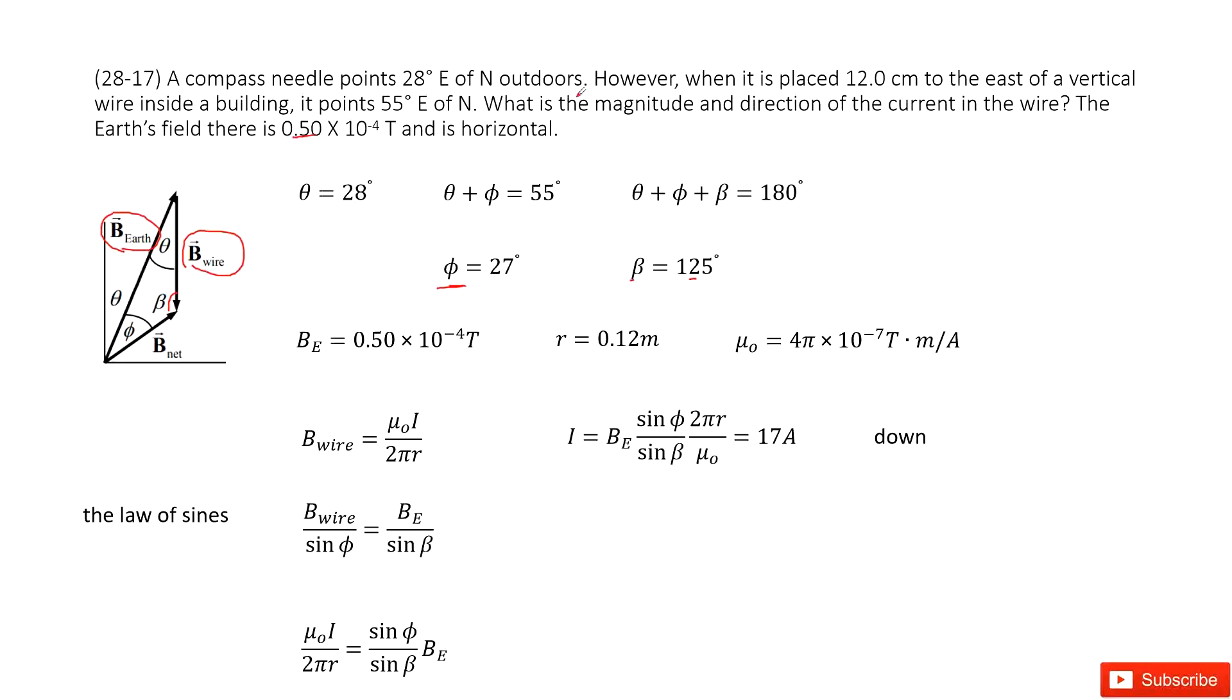You need to find the magnitude and direction of the current in the wire. You can connect this with B wire, the magnetic field for the wire: μ₀ times I divided by 2πr.